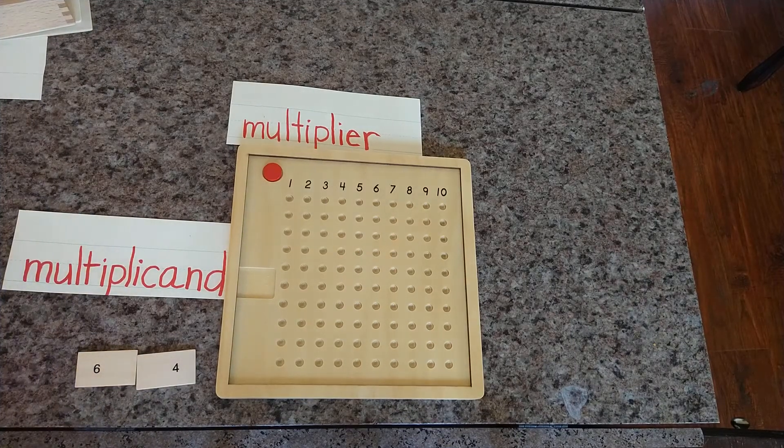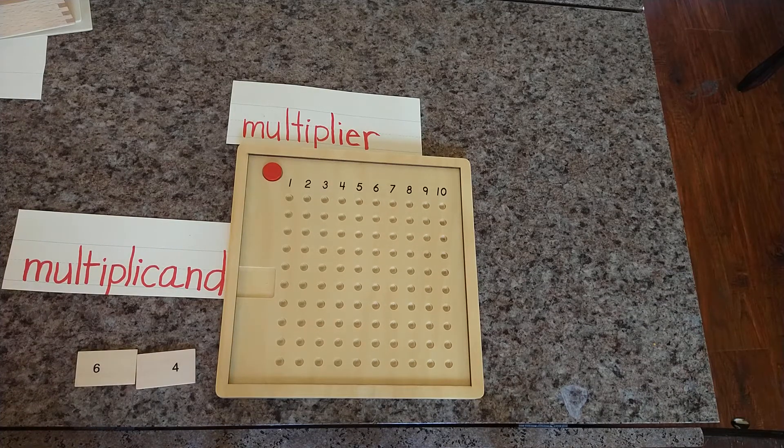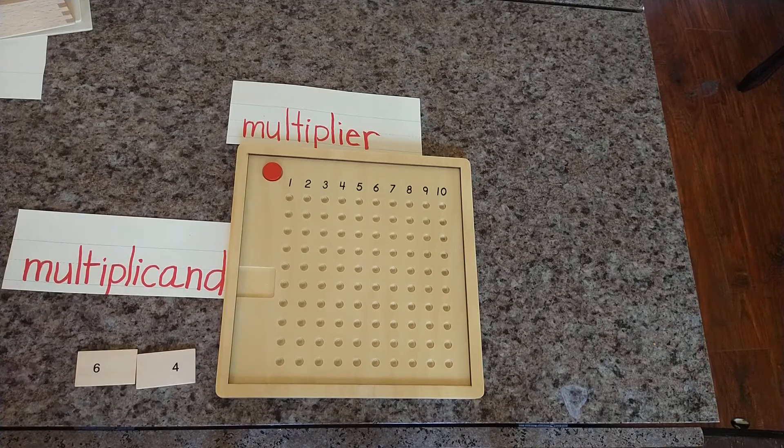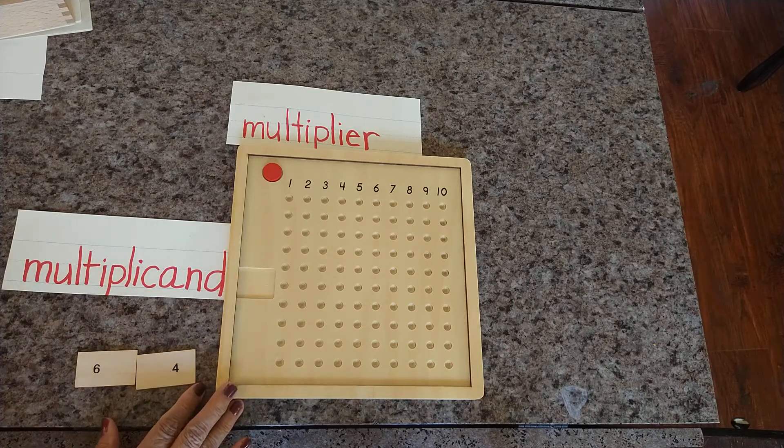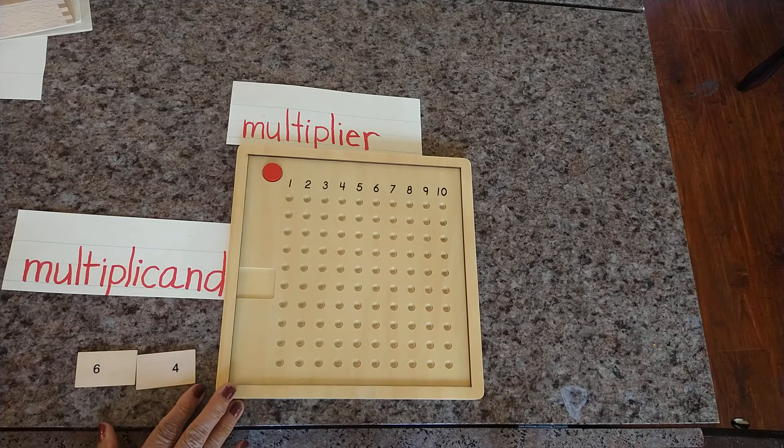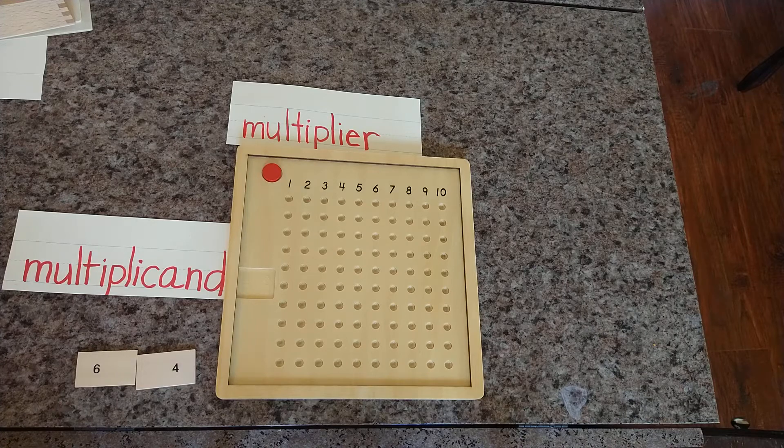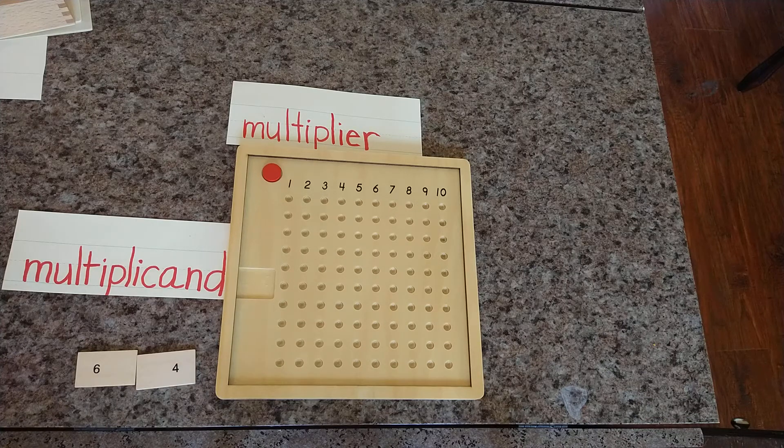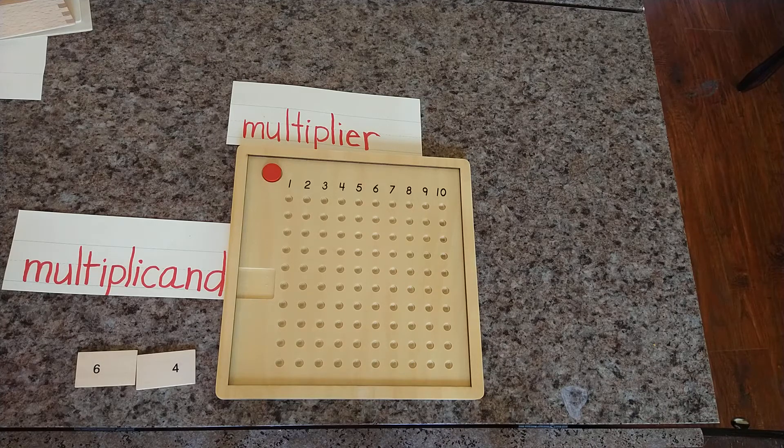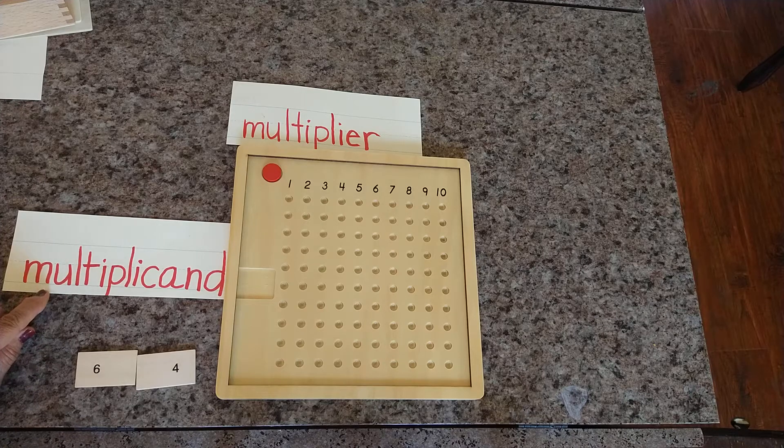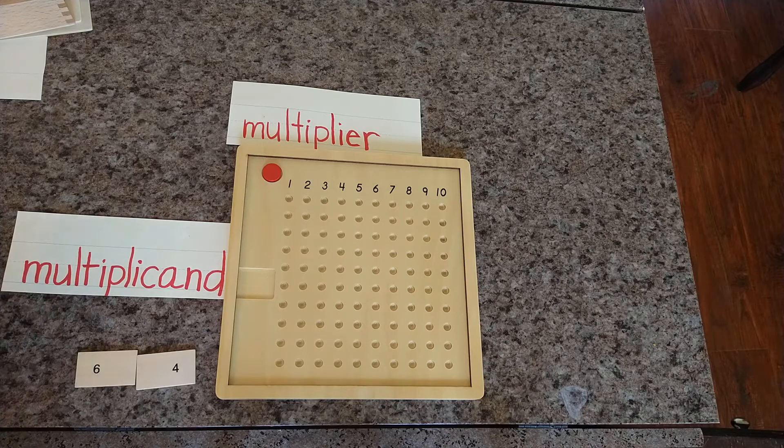Hi everyone, today we are going to learn how to do multiplication on the multiplication bead board. So here is the multiplication bead board. It has numerals from 1 to 10 on the top, they are called multiplier. The multiplier tells how many times to make the set. The multiplicand tells how many are in a set.